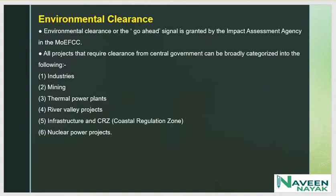Environment clearance, or the go-ahead signal, is granted by the Impact Assessment Agency in the Ministry of Environment Affairs. All projects that require clearance from the central government can be broadly categorized into the following industries, which are the categories of Environment Impact Assessment.